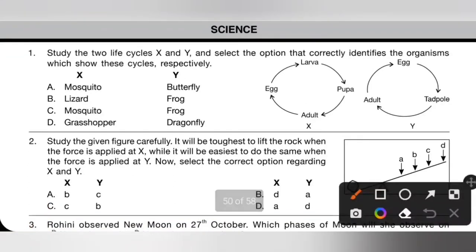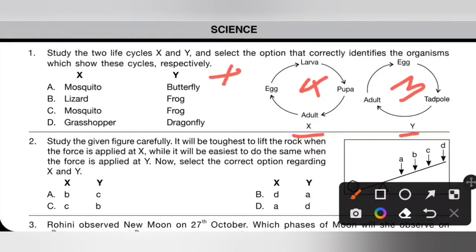The first section is science. Question 1: Study the two life cycles X and Y and select the option that correctly identifies the organisms. X has 4 stages and Y has 3 stages. Option A (mosquito, butterfly) is incorrect because both have 4 stages. Option B (lizard, frog) is incorrect because both have 3 stages. Option C (mosquito, frog) is correct because mosquito has 4 stages and frog has 3 stages. Option C is the correct answer.